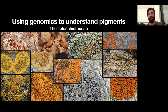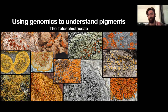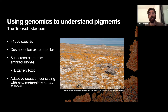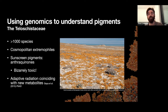How am I using this to actually understand the evolution of pigments? You might have noticed a theme throughout this presentation — there's been a lot of orange and yellow. That's because the group I work on is the Teloschistaceae, famous for these bright orange, red, and yellow pigments. The Teloschistaceae is one of the largest families of lichens, with over a thousand species described. I like to describe them as cosmopolitan extremophiles — you find this family everywhere, even in cities and disturbed landscapes, but their biodiversity hotspots are in extreme ecosystems, especially arid ones like in South Africa, where you find very diverse communities.